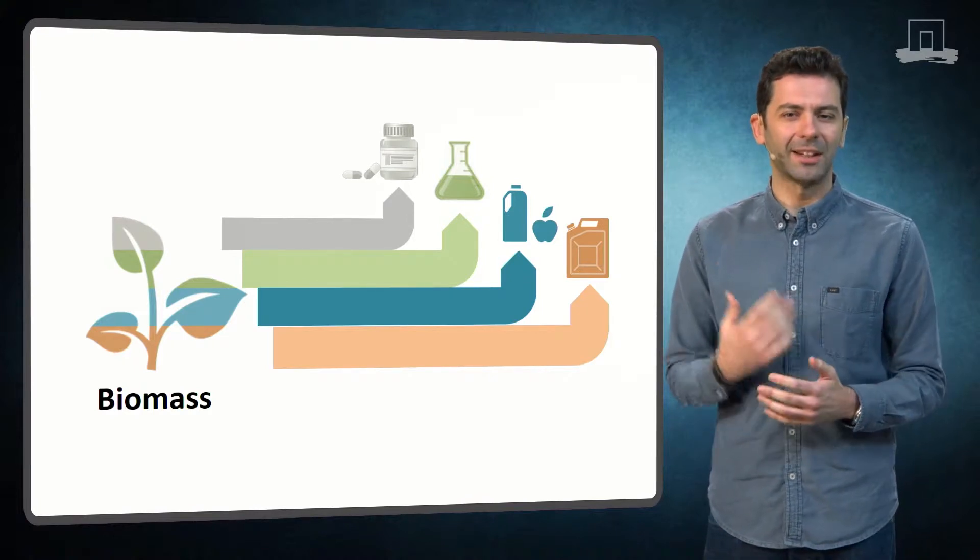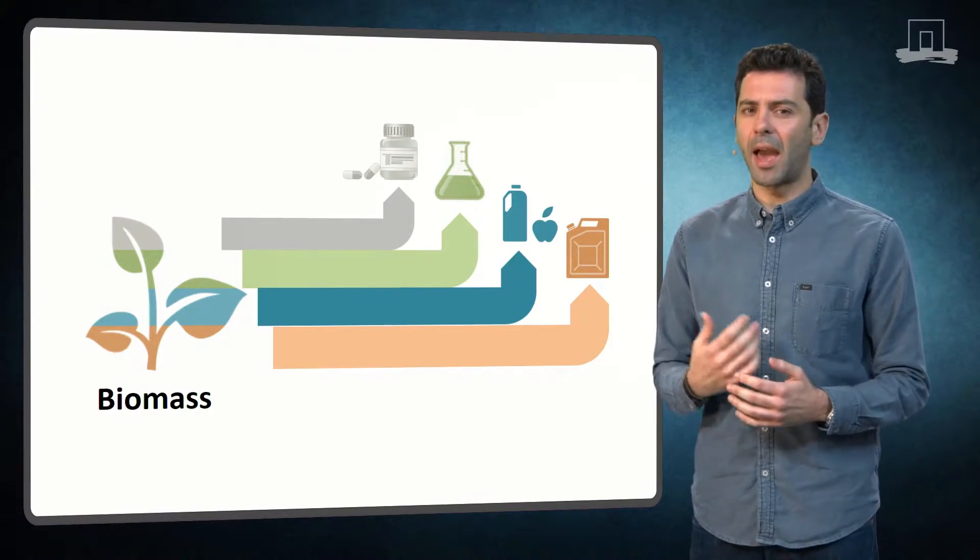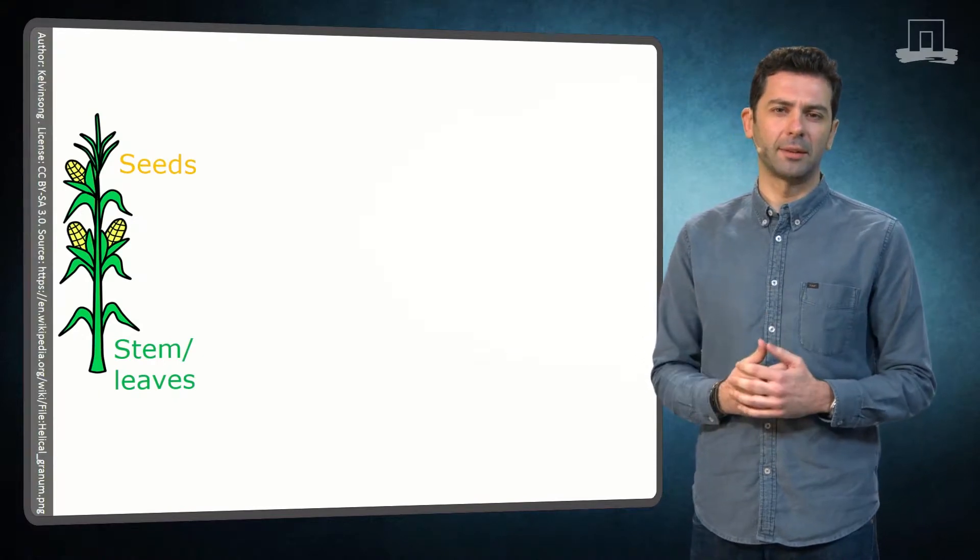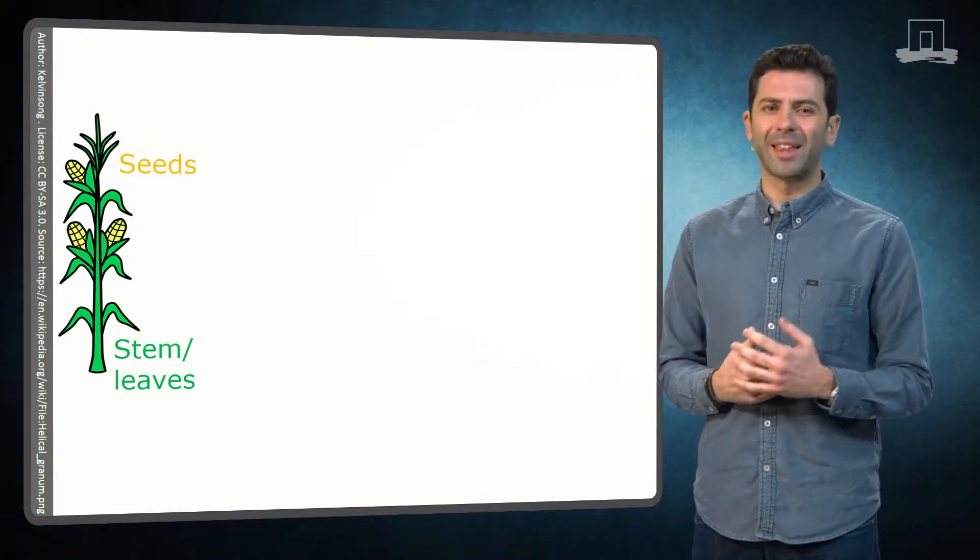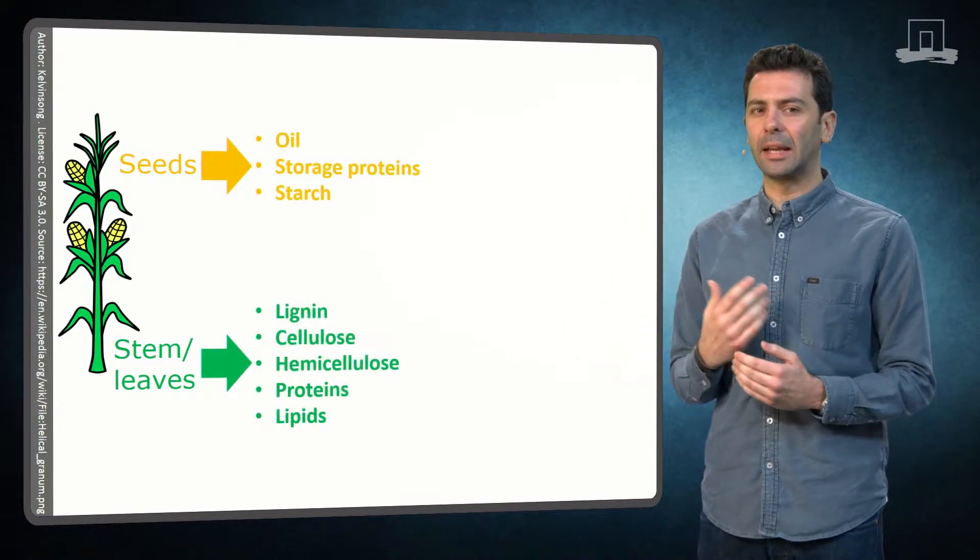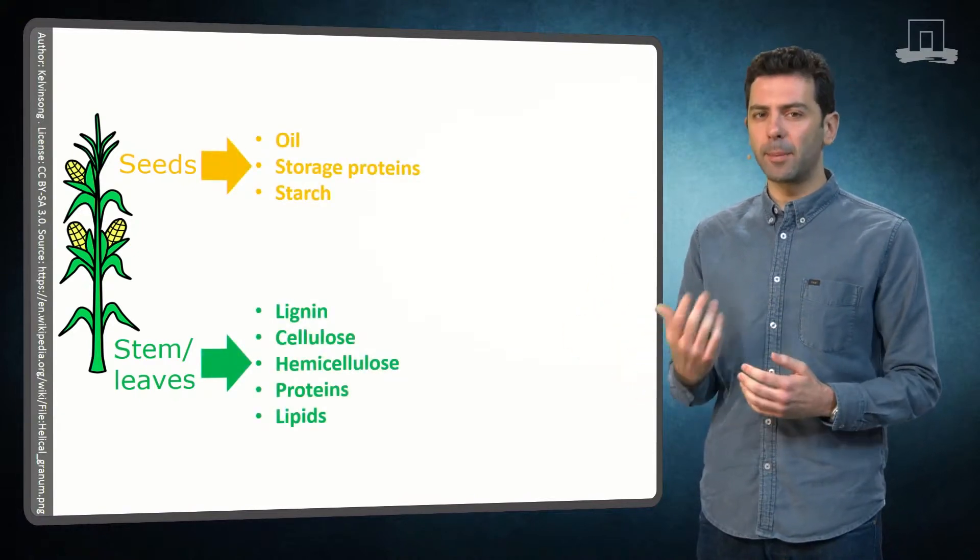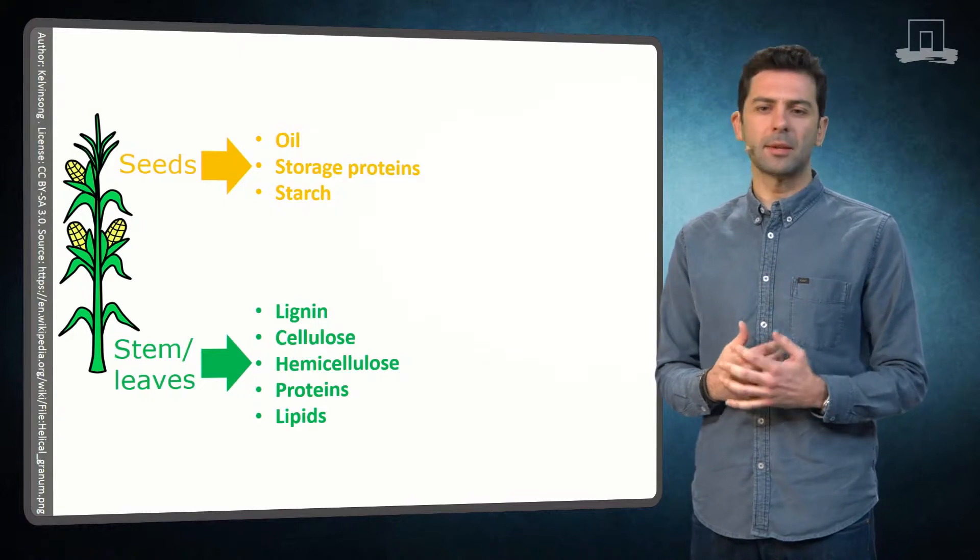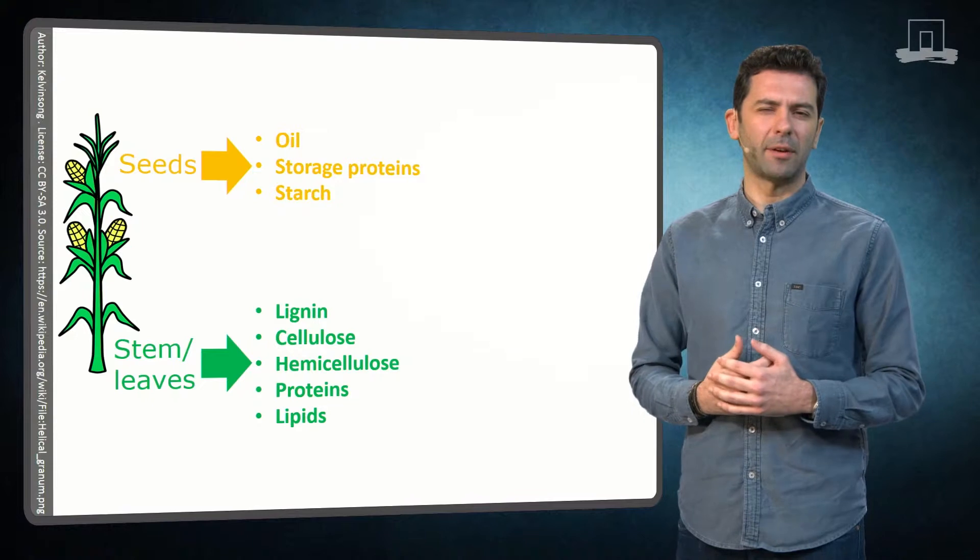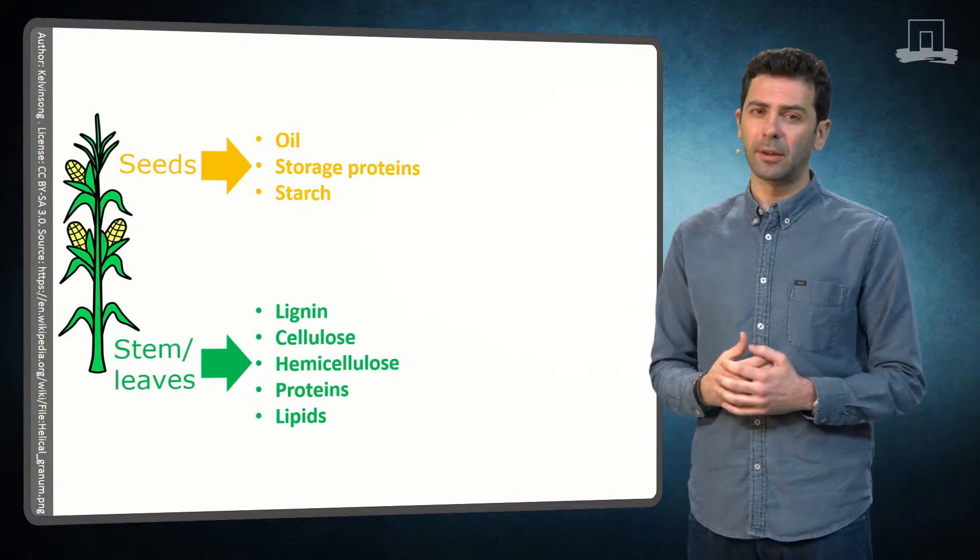Our motto is that nature can provide everything everywhere. Let's take the example of the corn plant. We can use the stems and the seeds. The stems can provide lignin, cellulose, hemicellulose, pectin, some proteins and lipids, while the seeds can provide oil, proteins and starch.